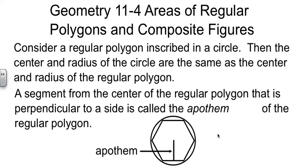Only a regular polygon has an apothem, and that measurement, that apothem, is crucial to finding the area of the polygon.